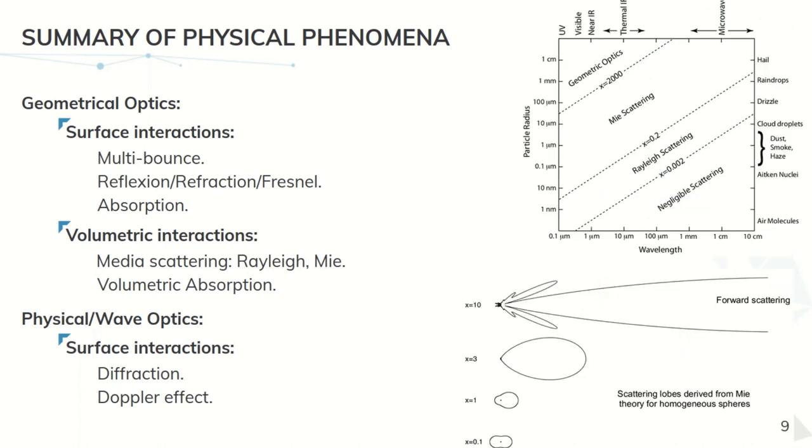Also, the volumetric interactions are going to be crucial because, as we can see in this plot, in this case of aerosols in the atmosphere, we are going to have very different kinds of scattering, like Mie and Rayleigh, depending on the sensor wavelength and also on the aerosol particle size.